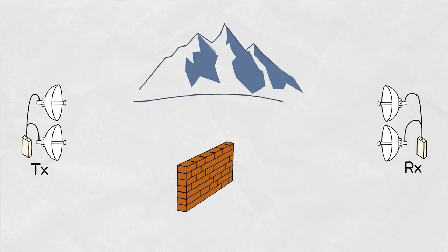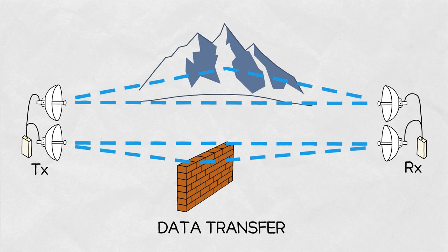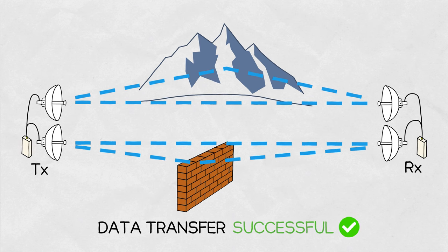Second is reliability. Multiple paths through which the signal can reach the receiver increases the probability of a successful data transfer.